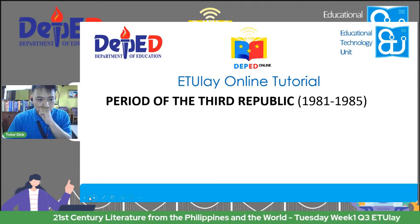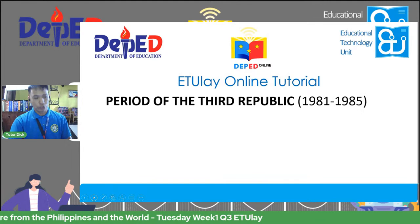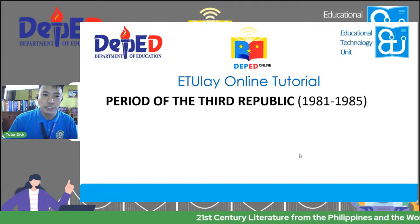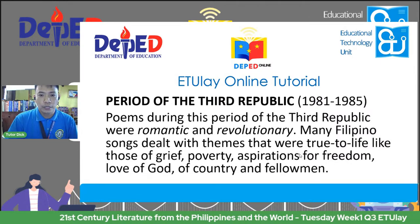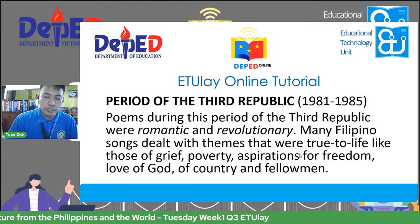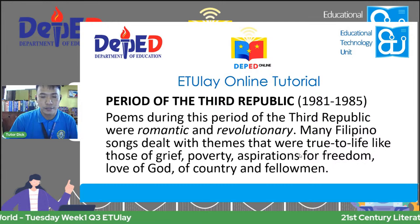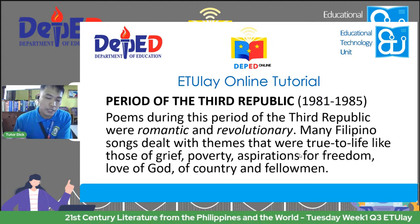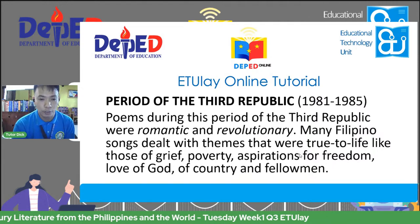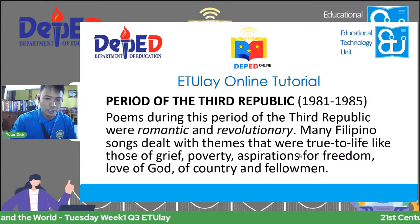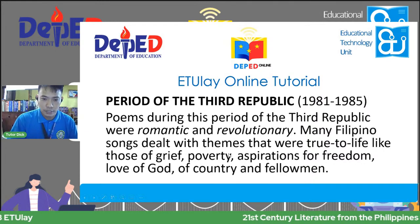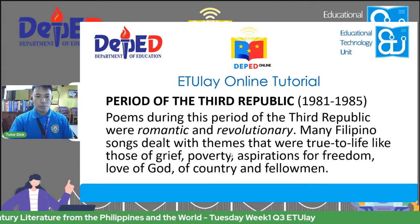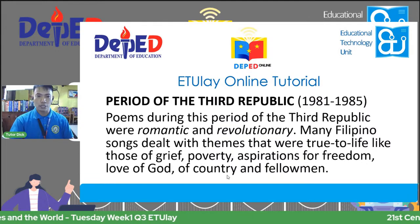Following the period of the new society would be the period of the third republic, 1981 to 1985. During this time, poems were very romantic and revolutionary. When we talk about romantic or romanticism, it is giving high reverence to something — anything other than love. If you are upholding truth, justice, freedom, you are also being romantic. Many Filipino songs dealt with things true to life, like grief, poverty, aspirations for freedom, love of God, of country, and of fellow men.